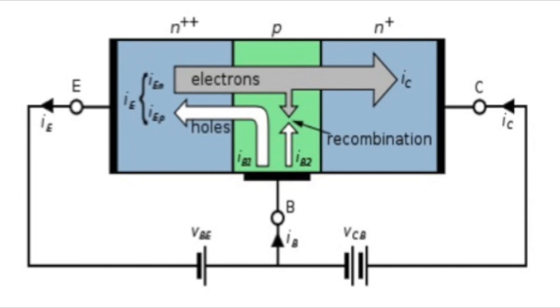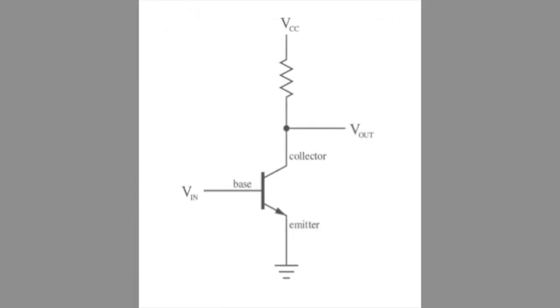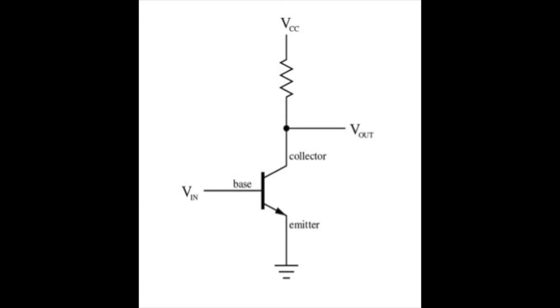In a bipolar transistor, current flows between emitter and collector. In a vacuum tube, current flows between anode and cathode. The additional voltage in a bipolar transistor is the base voltage.